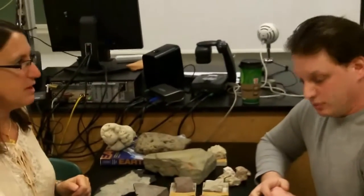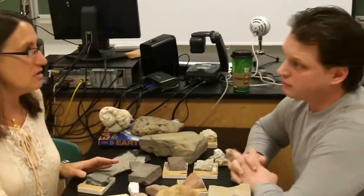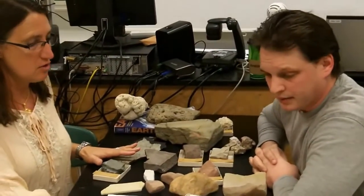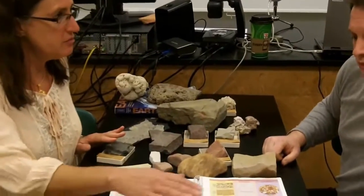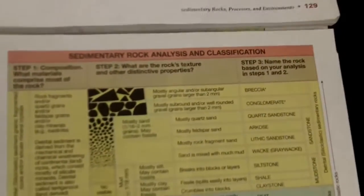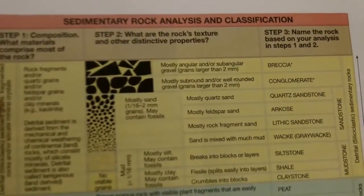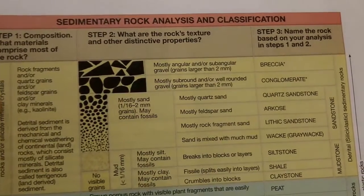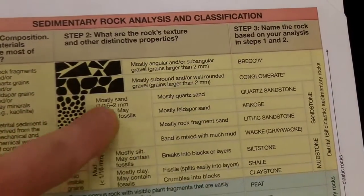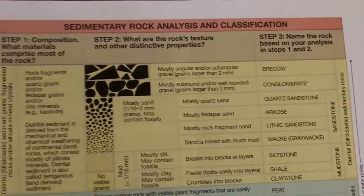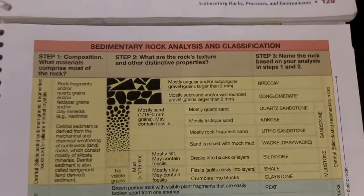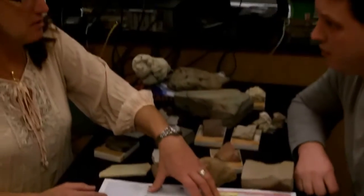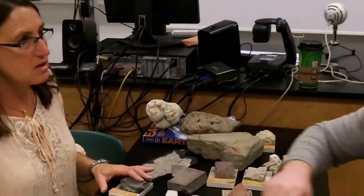We're going to switch to thinking about how we actually identify these rocks when we come across them, and what we can learn from them once we've identified them. We really have three steps in this process: step one is looking at the size and shape of the grains; step two is looking at the composition of those grains — whether it's gravel, quartz sand, other minerals mixed in with the quartz sand, or whether it's mud or clay; and then from there we can pick out the rock name as step three.